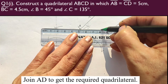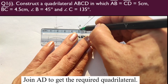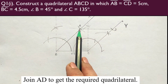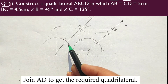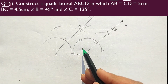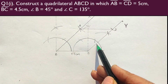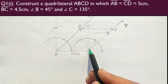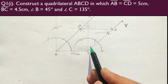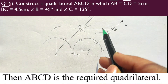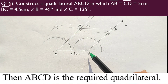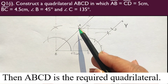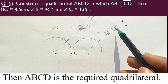Now just observe: in ABCD, angle B is 45° and angle C is 135°. Their sum is 180°. Hence they are co-interior angles being supplementary, so the lines AB and CD are parallel. Also, AB equals CD equals 5 cm. Hence ABCD is a parallelogram. This is something you should know — it can be asked in an exam.